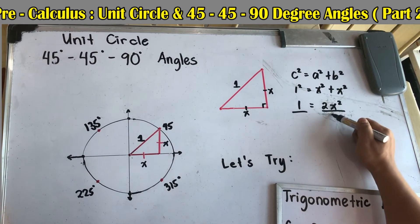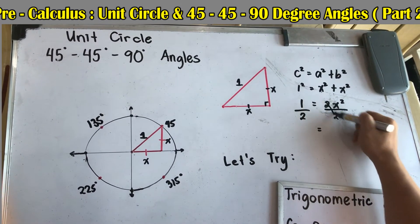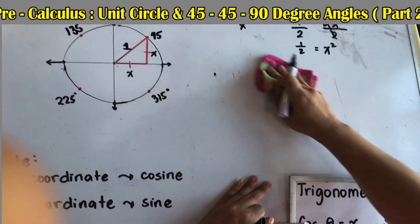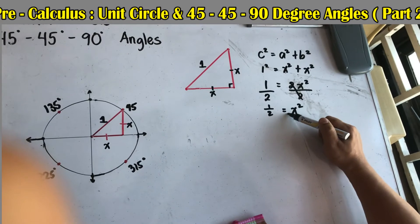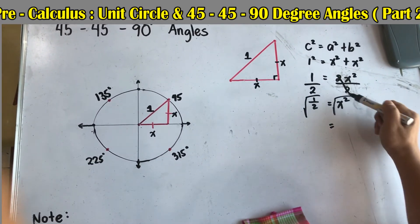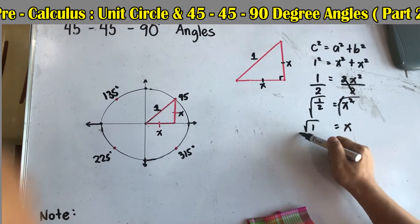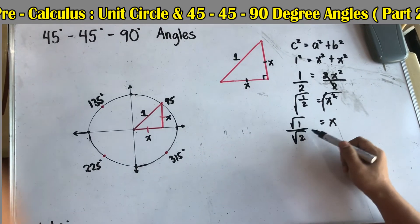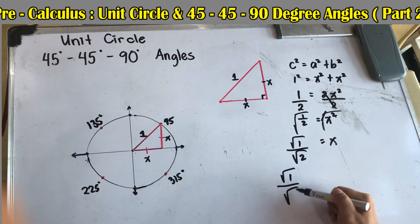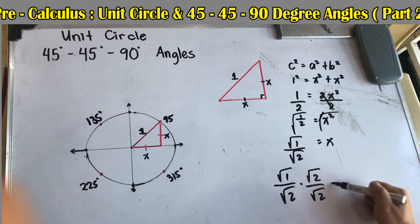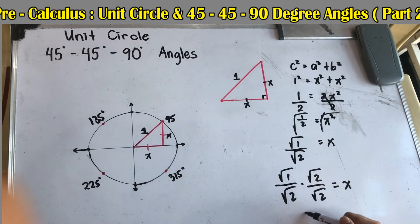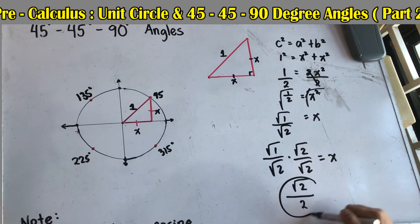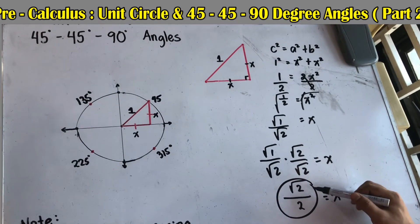Dividing both sides by 2 gives us x² = 1/2. Taking the square root, x = √(1/2) = √1 over √2. We need to rationalize since a square root in the denominator is not allowed, so we multiply numerator and denominator by √2. This gives √2 over √4, and √4 = 2. Therefore x = √2/2.